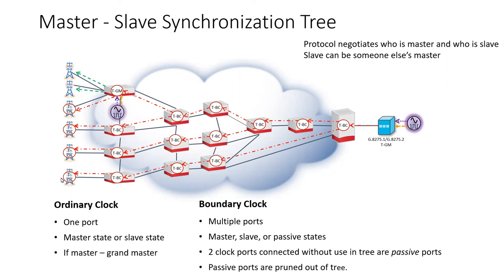So we have ordinary clocks, which are clocks with only one port — they can be either a master or a slave. A boundary clock is a clock that can act as both a master and a slave: it has one slave port and can have one or more master ports. It's a pretty cool protocol — how you're able to pull precise timing throughout the network while taking latency into consideration. Thanks for your attention. Take care.